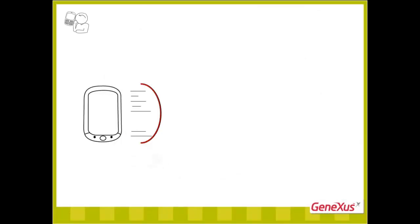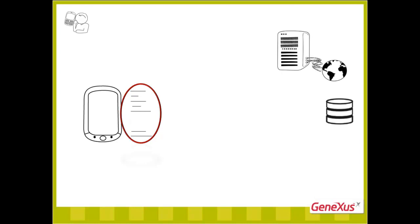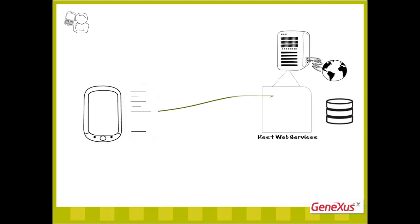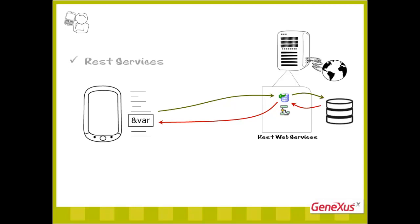Let's imagine that this is the code of the event in client. Then we also have the web server and the database. So, what can we do at this point? We can call the server's REST services, as data providers or procedures to search in the database, and return the information we will then load on a variable. They must necessarily be shown as REST services. We cannot call an internal procedure from the device.